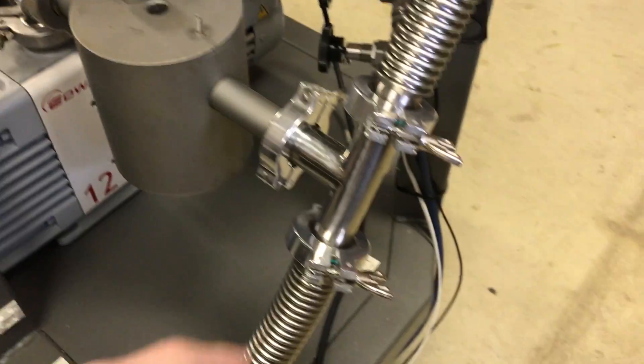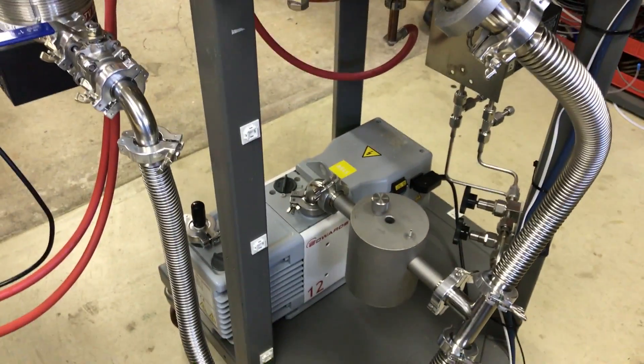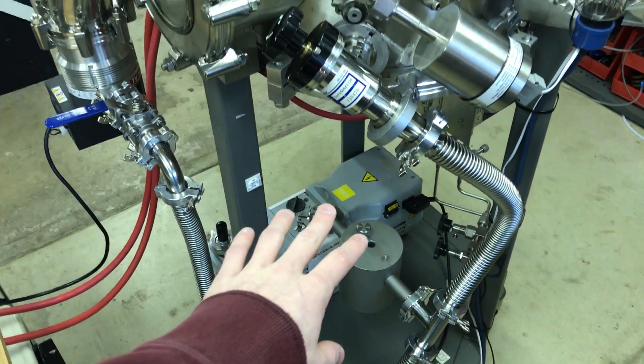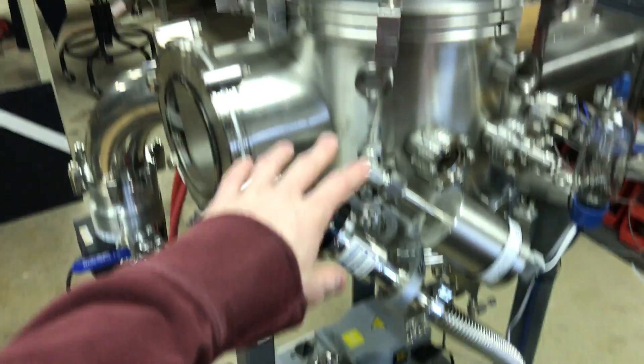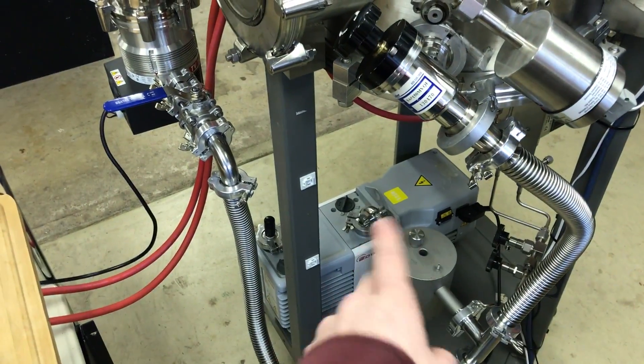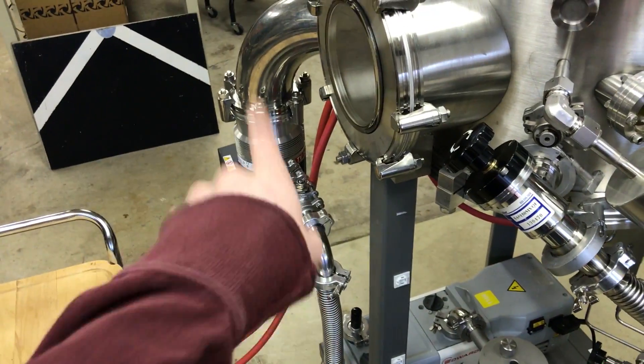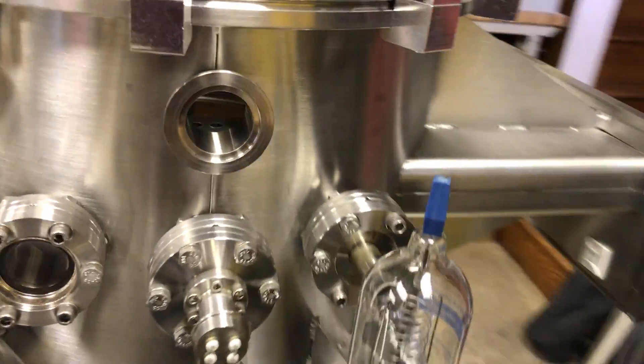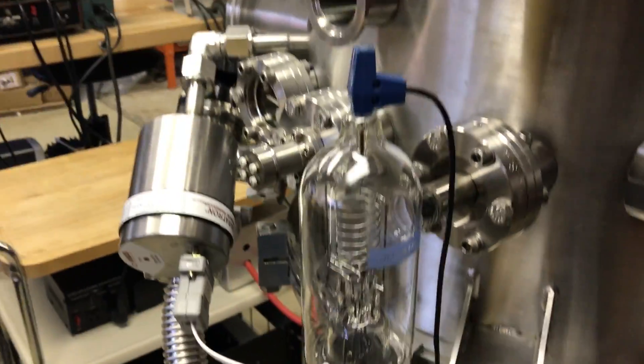I'm going to be using one of those to measure the backing pressure. I might tack it onto this T here or something, and that will allow me to measure my low vacuum side independently from the high vacuum, and just make sure that the mechanical pump is doing its job while we're backing the turbo.